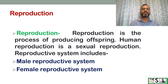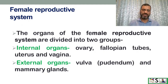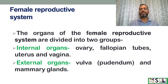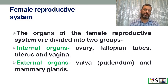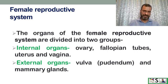In today's class we will discuss the female reproductive system. The organs of the female reproductive system are divided into two groups: internal organs and external organs. Internal organs include the ovary, fallopian tubes, uterus, and vagina. External organs include the vulva (pudendum) and mammary glands.